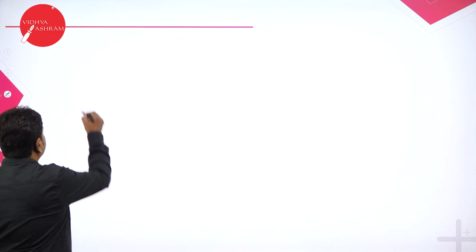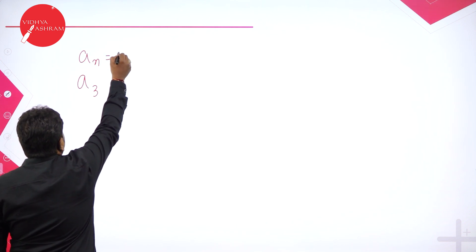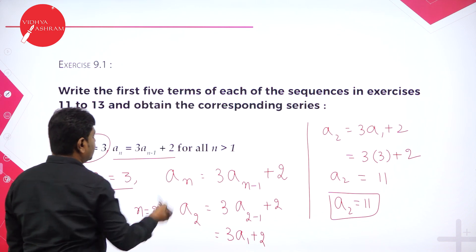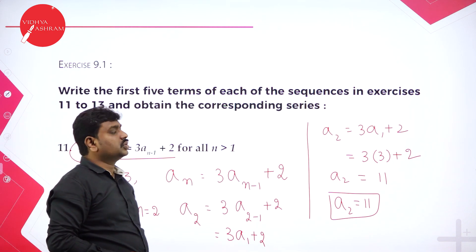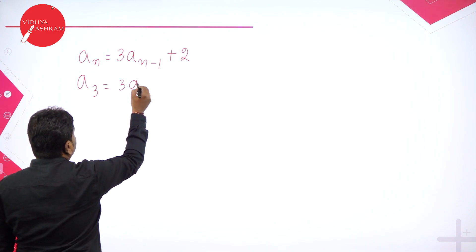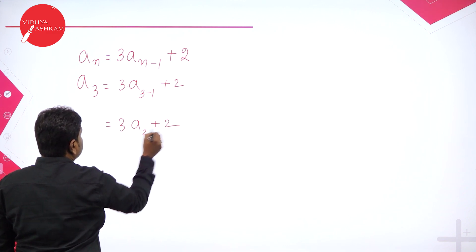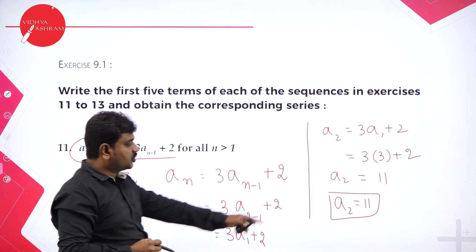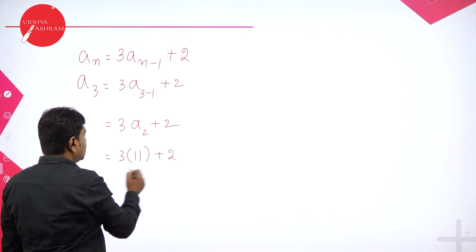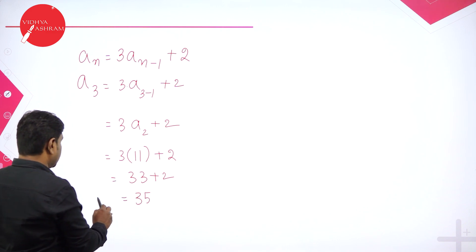Now go to A3. The formula gives Aₙ = 3 times Aₙ₋₁ plus 2. For A3, put N = 3: A3 = 3 times A2 plus 2. A2 is 11, so A3 = 3 times 11 plus 2 = 33 plus 2 = 35.